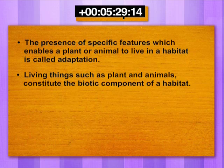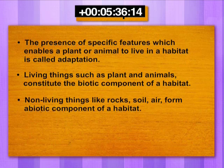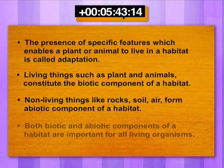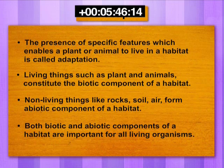Living things such as plants and animals constitute the biotic component of a habitat. Non-living things like rocks, soil, and air form the abiotic component of a habitat. Both biotic and abiotic components of a habitat are important for all living organisms.